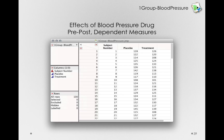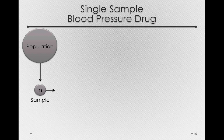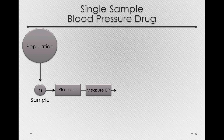Let's look in more detail about how this experiment might carry out. We have some population from which we take a sample of size N. For the first two weeks, individuals will be taking a placebo drug — one that still comes in a bottle and looks like real medicine but doesn't actually have any active ingredient. At the end of the two weeks we'll measure the blood pressure for these individuals, yielding a hundred measurements from X1 up to X sub N.